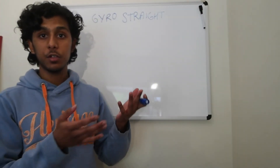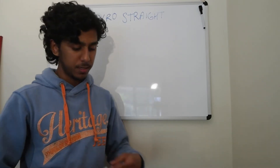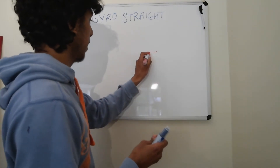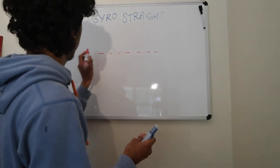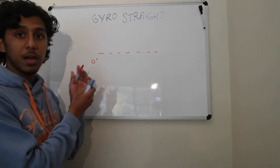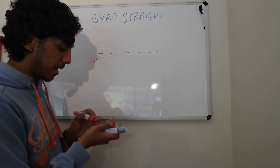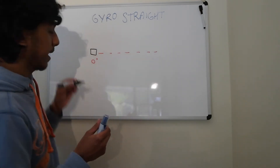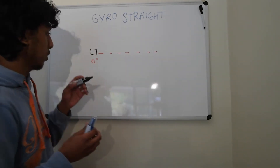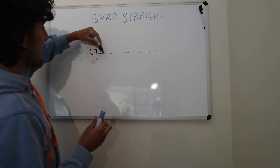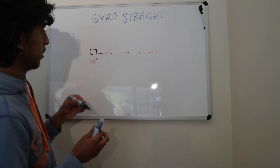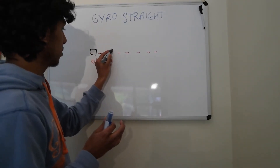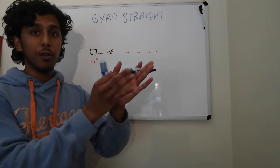Now we're going to explain how the gyro straight actually works. I'm going to draw a dotted line — let's assume this dotted line is perfectly straight and it represents the zero angle. Now I'm going to draw a visual representation of the robot. Imagine you're looking at the robot from the top and it's just a square. So if your robot is traveling along and it's going at zero degrees, eventually it's going to veer one way or another. Let's say the robot veers — that creates an angle of two degrees.